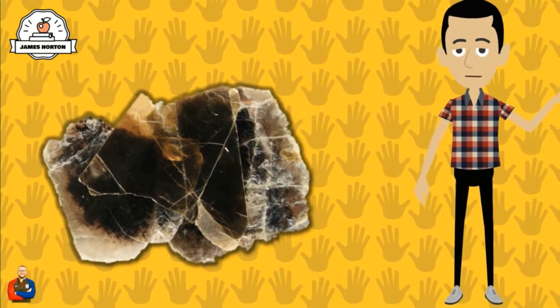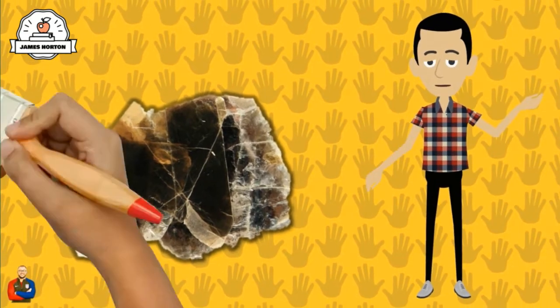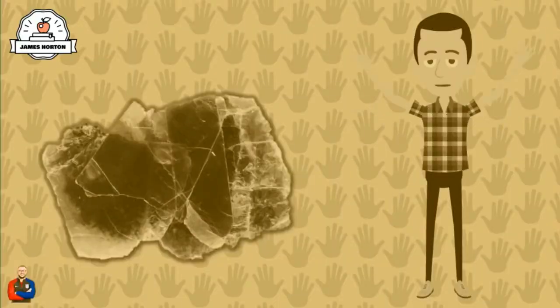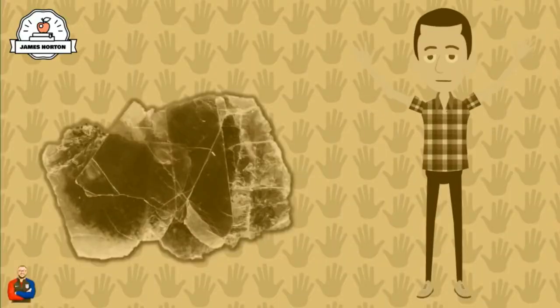The rock located here is called mica. Mica splits into little sheets, almost like paper, because it has cleavage. Cleavage describes how a mineral breaks into flat surfaces.